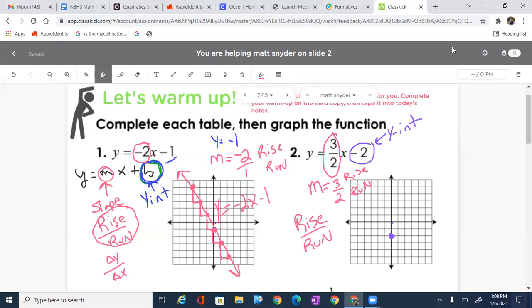Rise three. This time, the three is positive. I'm going to count up three. One, two, three. And then, I'm going to run two. It's a positive two. We go to the right. One, two. And then, we go up three again. One, two, three. And over two.